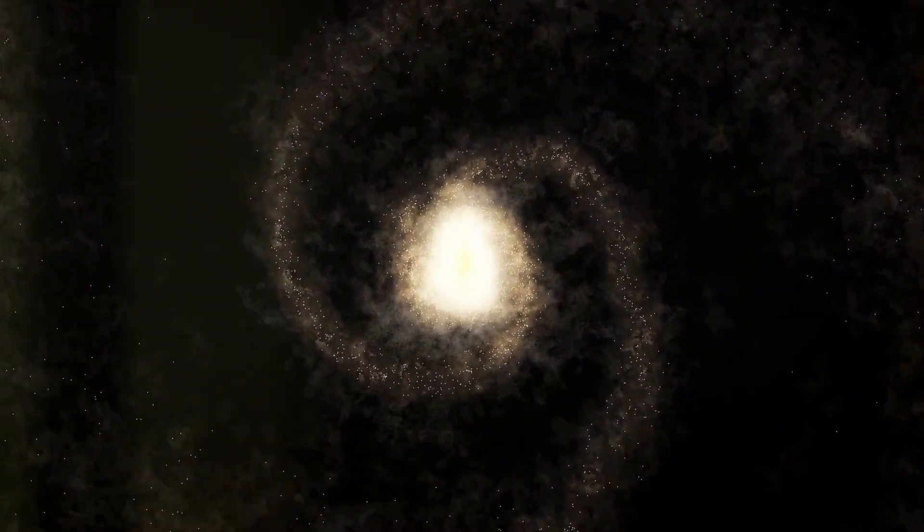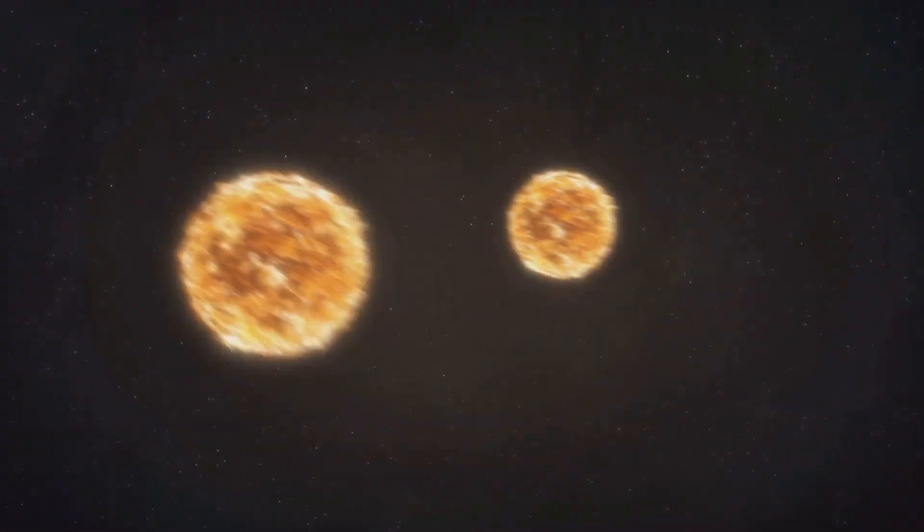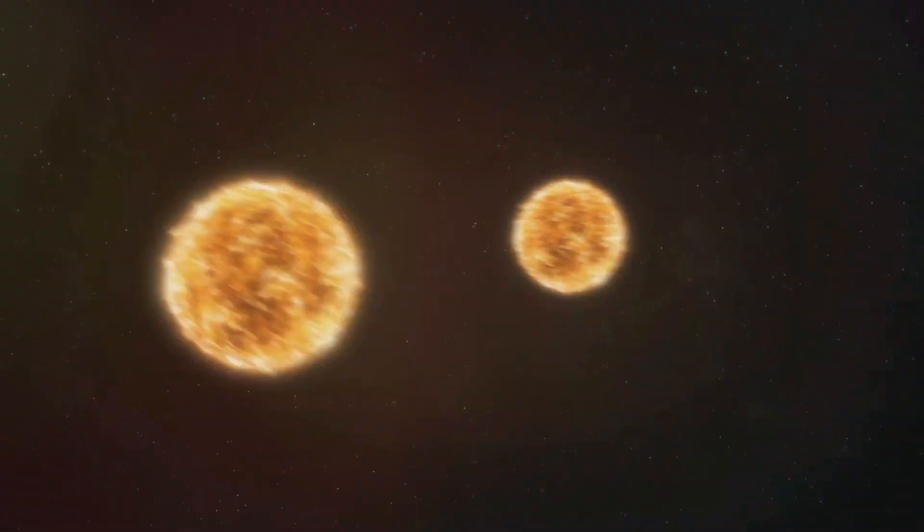The most immediate impact would be on the S-stars, which are locked in tight orbits around Sagittarius A. Without the gravitational anchor of the black hole, these stars would lose their stable paths. As these stars fly off in different directions, the core of the Milky Way would descend into chaos.